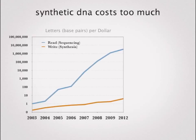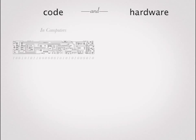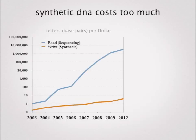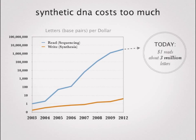One of the problems with DNA is it costs too much to make. The cost to read it is improving very rapidly, but it's still slow at the cost to write it. In terms of read-write performance, cost performance, and speed, this is an area we're focused on addressing. Today, for a dollar, you can read about three million letters of DNA. But for a dollar, you can write accurately about one letter of DNA.